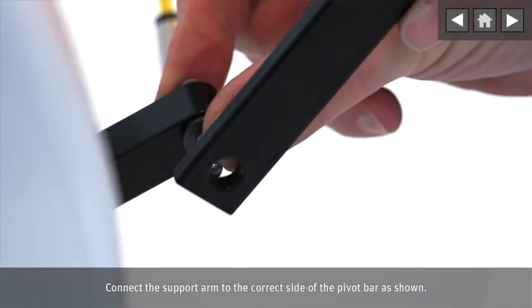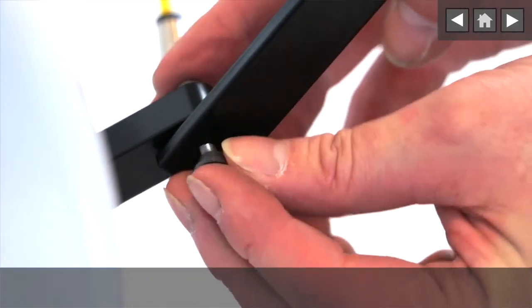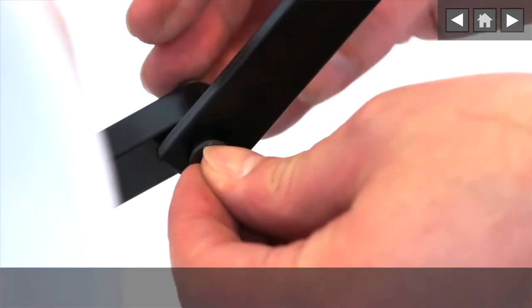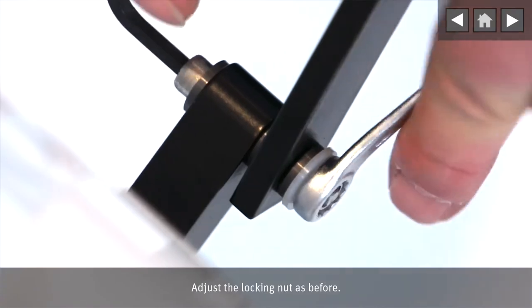Connect the support arm to the correct side of the pivot bar as shown. Adjust the locking nut as before.